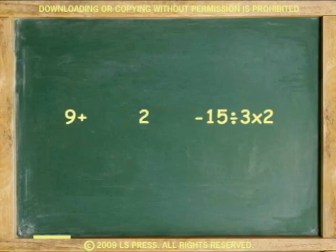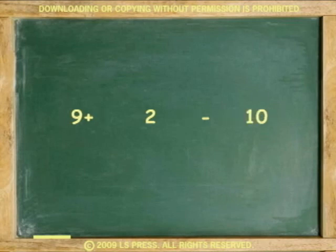And on the second division, it's 15 divided by 3, which is 5. And then multiply by 2 to get 10. Finally, add 9 and 2. Subtract 10 to find the answer, which is 1.